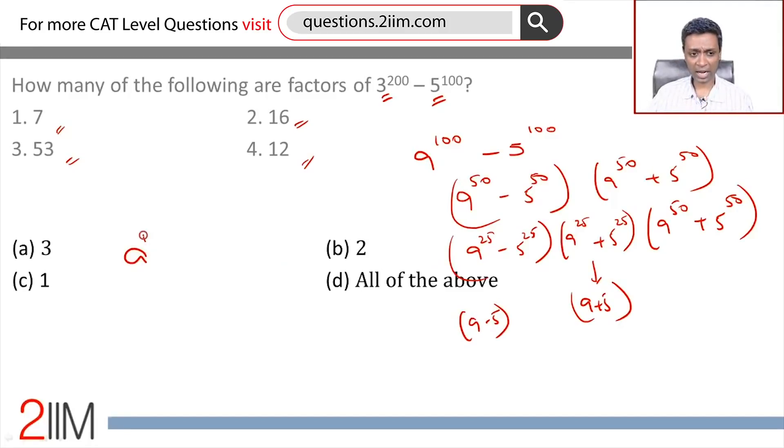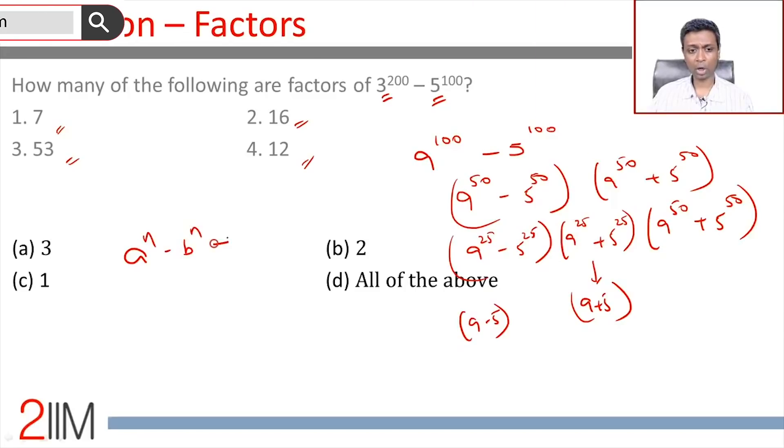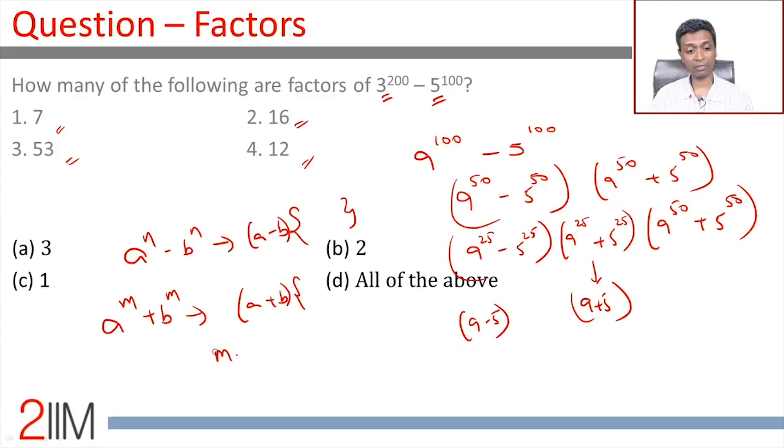Two simple rules: a^n - b^n will always be a multiple of a - b, wherever n is a natural number. A^m + b^m will be a multiple of a + b, whenever m is an odd natural number.